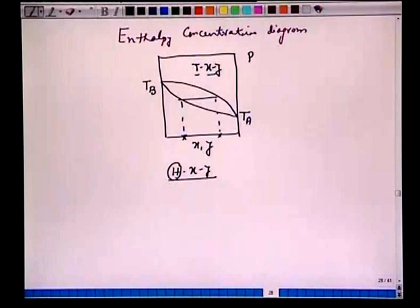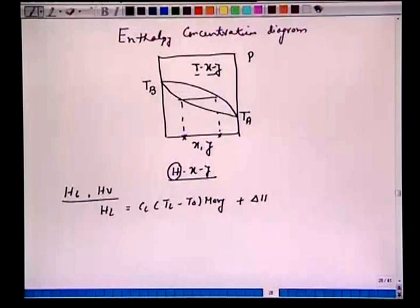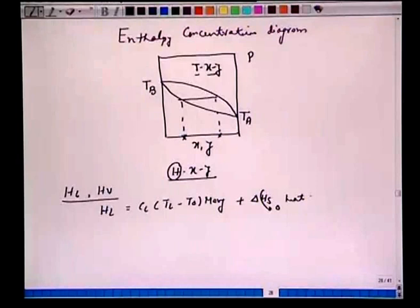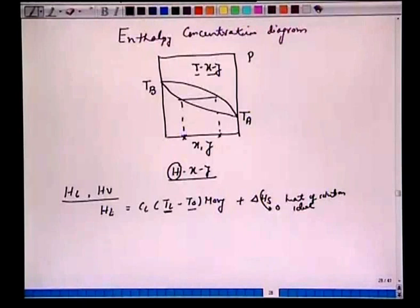Before we calculate the H-x-y diagram, let us define H_L, the enthalpy of a saturated liquid, and H_V, the enthalpy of a saturated vapor. H_L is defined as C_L multiplied by (T_L minus T_0) multiplied by the average molecular weight, plus ΔH_S, the heat of solution. For ideal solutions, the heat of solution is taken to be zero, so we do not have that term. If H_L represents the enthalpy of a saturated liquid, then T_L is T_sat.